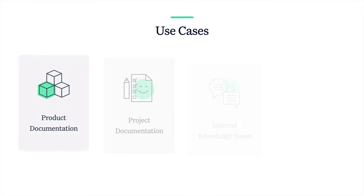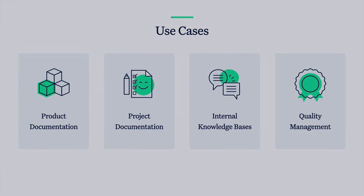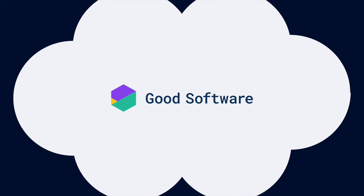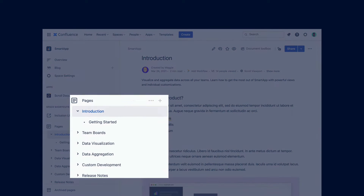You can manage all types of documentation both internally for your teams and externally for your customers or partners. For instance, you can use Scroll Documents to deliver version, product and project documentation, manage handbooks and standard operating procedures, or save snapshots of your quality manuals and procedures. Let's take a look at an example where a company called Good Software uses Scroll Documents to manage the product documentation for their apps. Topics are organised on pages and neatly in the page tree.